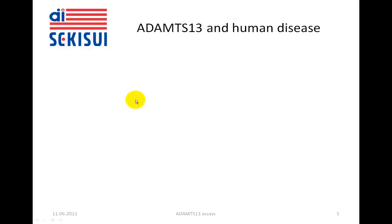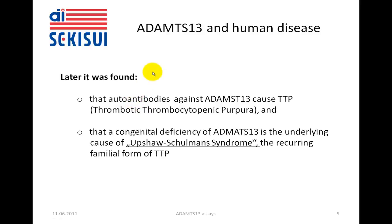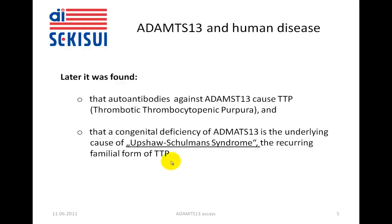ADAMTS-13 and human disease. It was found that autoantibodies against ADAMTS-13 are the underlying cause of a disease called TTP — thrombotic thrombocytopenic purpura. It was also found that an inherited congenital deficiency of ADAMTS-13 is the underlying cause of the so-called Upshaw-Schulman syndrome, which is a recurring inherited form of TTP.